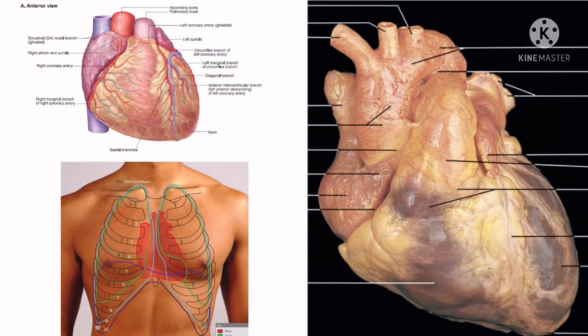Sometimes the heart is malpositioned with the apex on the right side. This condition is called dextrocardia. It may be associated with complete reversal of other thoracic and abdominal viscera, which is a condition known as situs inversus.